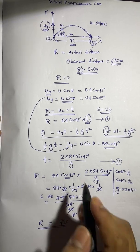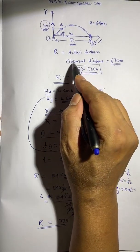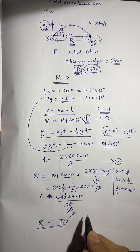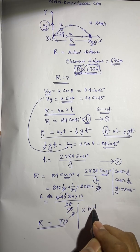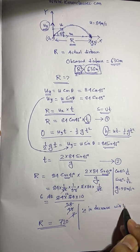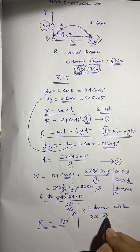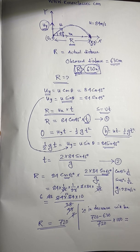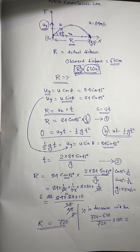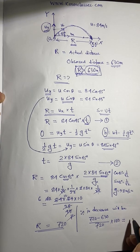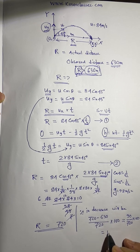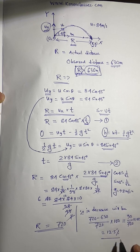To get the percentage decrease: the observed distance is 630 meters and the actual distance is 720 meters. Percentage decrease = (720 − 630) / 720 × 100 = 90 / 720 × 100 = 12.5%. So the answer is 12.5 percent.